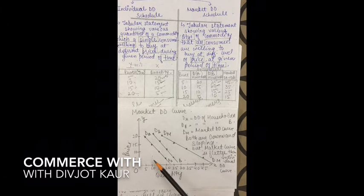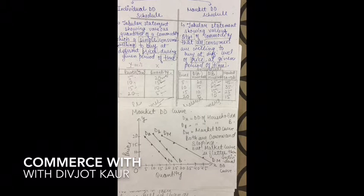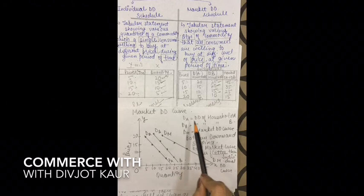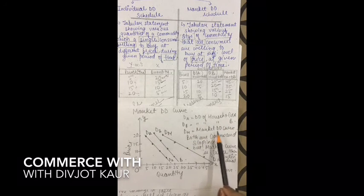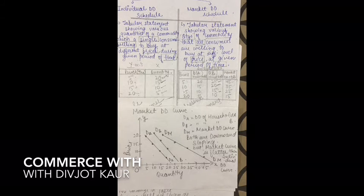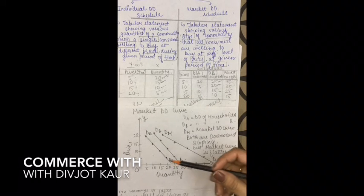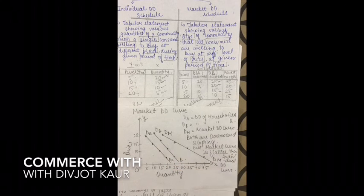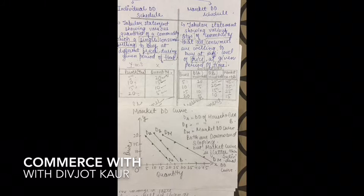By joining the dots we get three demand curves: DA is the demand curve of household A, DB is the demand curve of household B, and DM is the market demand curve. Both individual and market demand curves are downward sloping, but the market demand curve is flatter than the individual demand curve. This is because when one household's consumption decreases, another household's consumption may increase, making the overall market curve flatter.